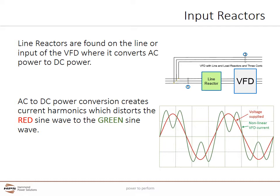Line Reactors are found on the line or input of the VFD where it converts AC power to DC power. All three AC phases energize a single common DC bus. AC to DC power conversion creates current and voltage harmonics, which distorts the perfect sine wave. Line Reactors will help to mitigate this distortion.